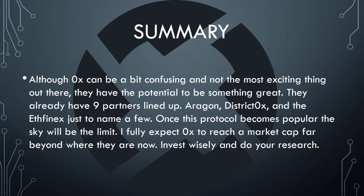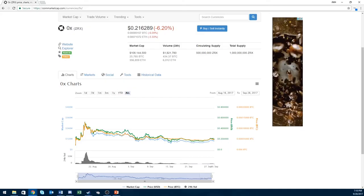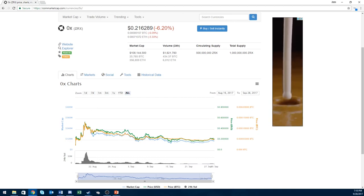In summary, although 0x can be a bit confusing — and this is one of the hardest coins I've had to research — they have the potential to be something great. They already have nine partners lined up, including Aragon, district0x, and the eFenix integration, just to name a few. Once this protocol becomes popular, the sky is definitely the limit. I fully expect 0x to reach a market cap far beyond where they are now, in the billions. Invest wisely and do your own research.